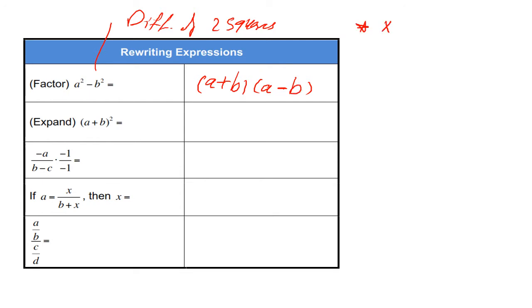For example, X squared minus 9. It's equal to X minus 3 and X plus 3.